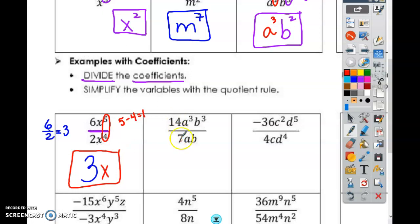What about these two? What do I do with these two? You divide them, right? 14 divided by 7. 14 divided by 7 equals 2. So my big number is 2. And then you subtract these. This is a 1. And this is a 1. If there's no number, it's a 1. So 3 minus 1. 2. So both of these are going to be 2. So a is going to be squared. And b is going to be squared.